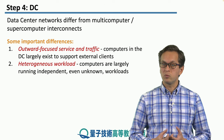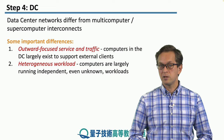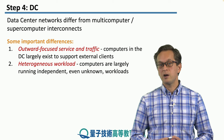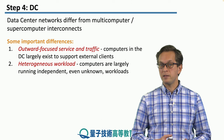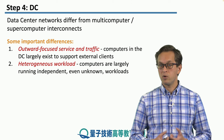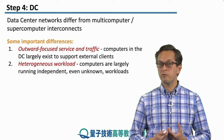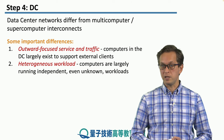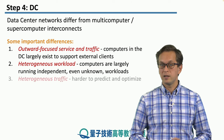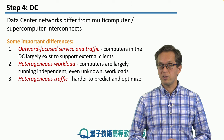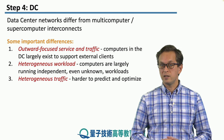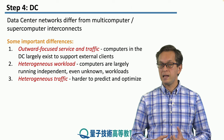Also, the workload is very heterogeneous. Computers inside a quantum data center network are usually running independent, sometimes even unknown workloads — where workloads refers to the programs that the clients delegate to the quantum data center. The traffic pattern is also very heterogeneous, and therefore it's very hard to predict and optimize.